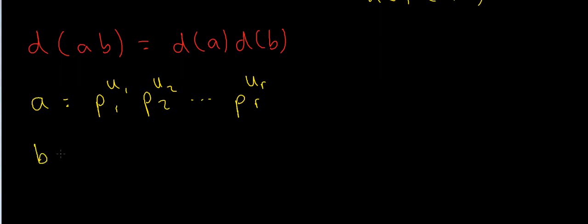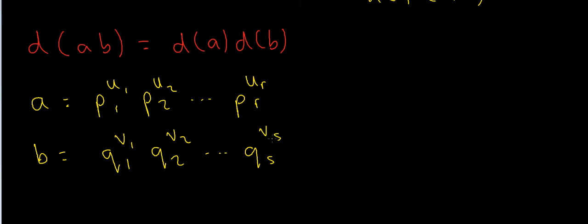I'm also going to let b have a prime factorization: b = q1^v1 times q2^v2, all the way up to qs^vs. Here q1, q2, ..., qs are also prime numbers, and v1, v2, ..., vs are non-negative integers. For example, b could be 3^4 times 5^2 and so on.